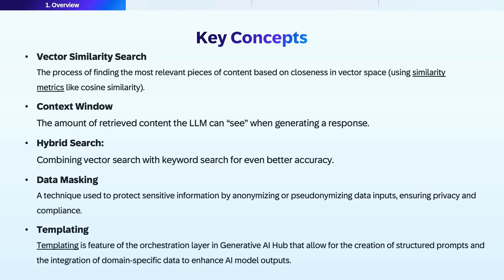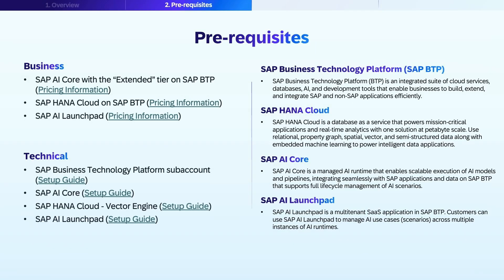Templating is a feature of the orchestration layer in Generative AI Hub that allows the creation of structured prompts to include domain-specific data. Before implementing, let's cover the prerequisites needed on SAP Business Technology Platform. You will need an SAP AI Core service with the extended tier on SAP BTP to enable Generative AI Hub access. You will also need SAP HANA Cloud for the vector database, and SAP AI Launchpad to configure models within Generative AI Hub. Pricing information on all these services is available and linked in resources.